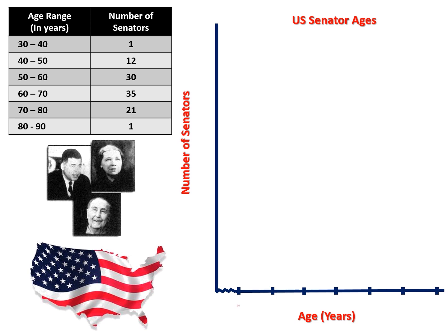So we're going to write 30, 40, 50, 60, 70, 80, and 90 on the X axis. For our Y axis, our highest number is 35 and our lowest number is 1, so we're going to count by fives. Now we're ready to graph.